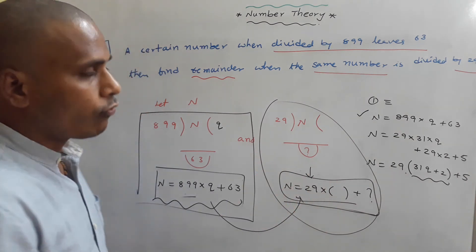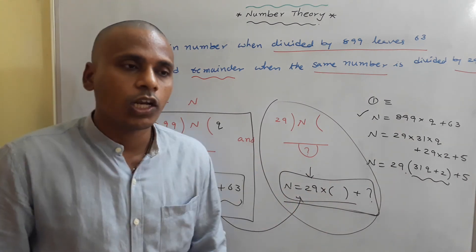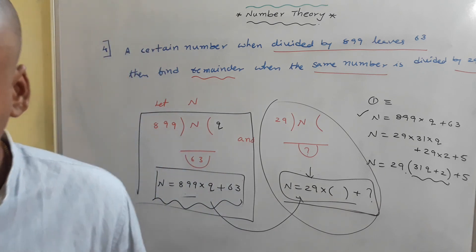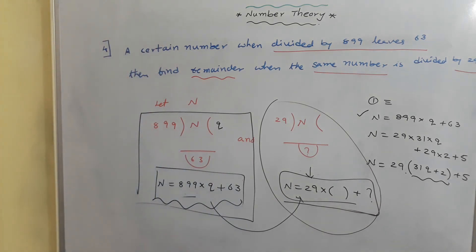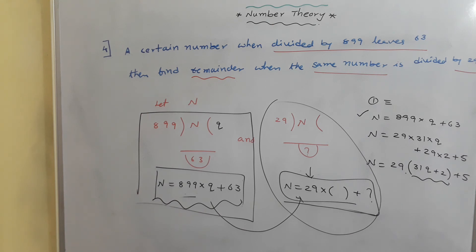So the remainder when the number is divided by 29 is 5. This is another application of the division algorithm. These four different problems help strengthen your understanding of the division algorithm. In the next class, I will give you different problems based on divisibility rules and the way of finding remainders using divisibility rules. That's all for today's class. Thank you.